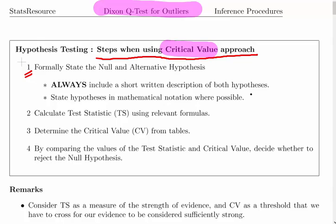And where possible, state the hypotheses in mathematical notation. That would be quite common when we're dealing with means and proportions, but in this case it's probably not as relevant and it doesn't help. So a brief written description is sufficient in the case of the Dixon Q-Test.